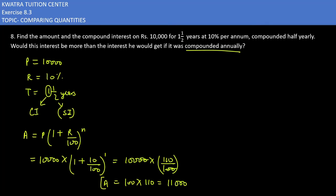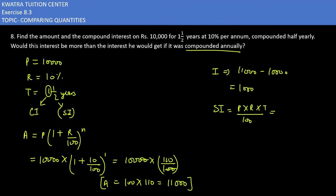The amount after one year is rupees 11,000. The interest for this year is 11,000 minus 10,000 equals rupees 1,000. Now for the remaining half year, we use simple interest: SI = P × r × t / 100. Principal is now 11,000, rate is 10%, and time is half a year. Cancelling gives 550 rupees.